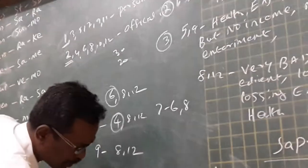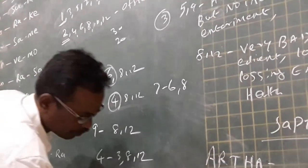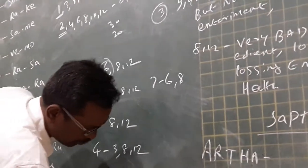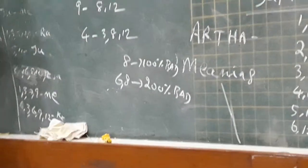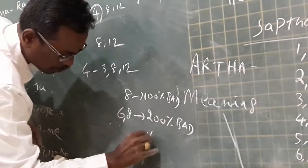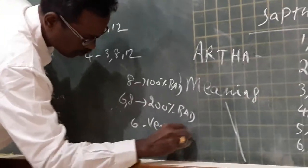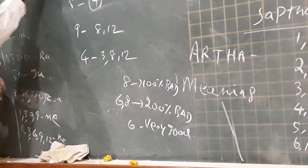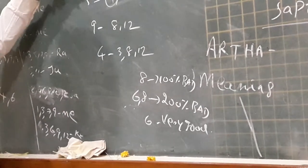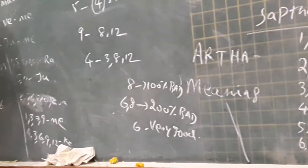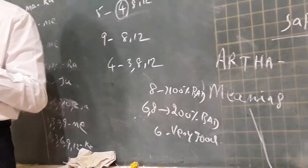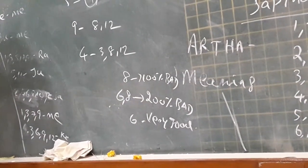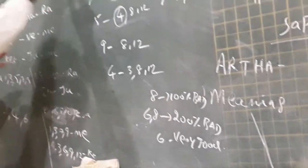That is why I am telling 8th house is the 100% bad. But 6th house is 200% bad. But 6th house is very good. Because if 6th is converted as 8th means, this bad matter only develops. If 6th house is connected to 8th house, this is not a double.